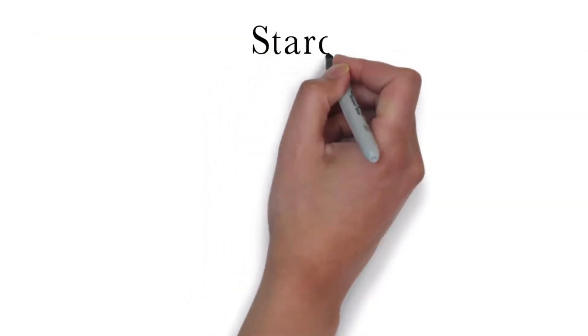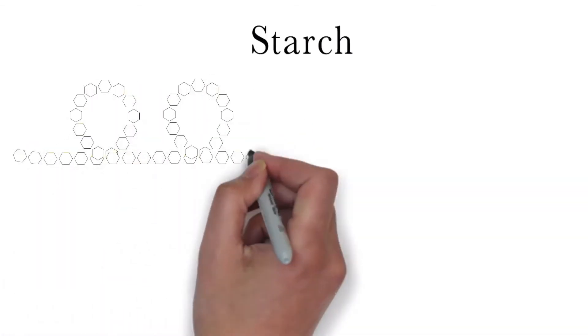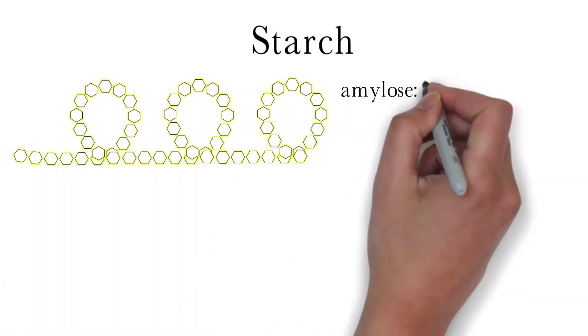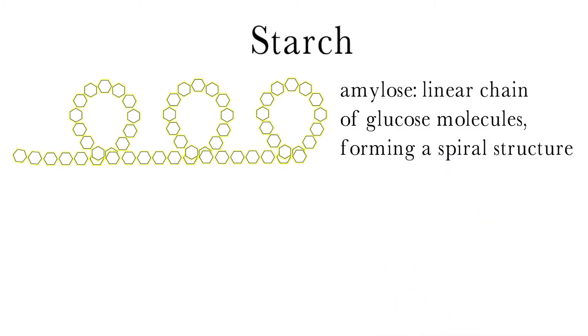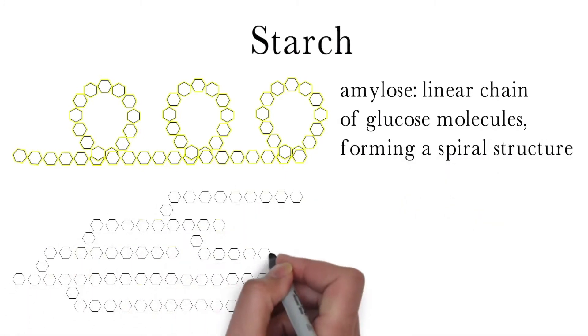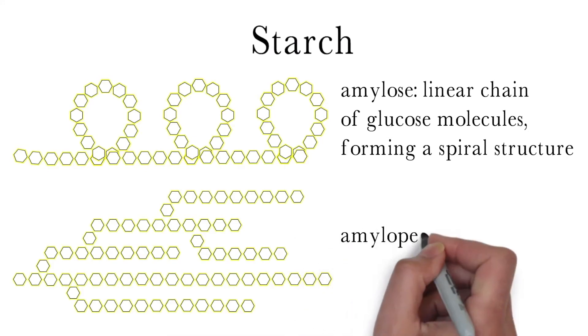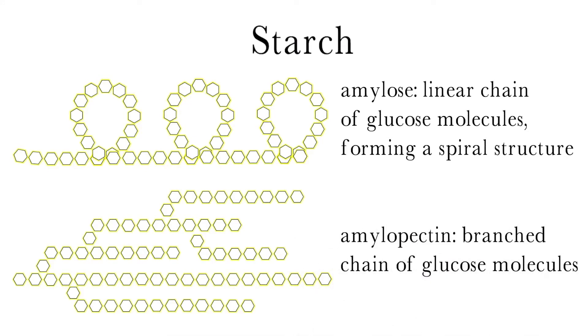Similar to how the human body stores glucose as glycogen, plants store glucose in the form of starch. The first is amylose, which is a linear chain of glucose molecules that form a spiral structure. The second is amylopectin, which is a branched chain of glucose molecules. Both chains contain hundreds to thousands of glucose molecules.